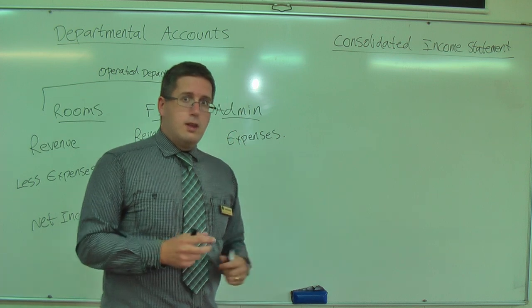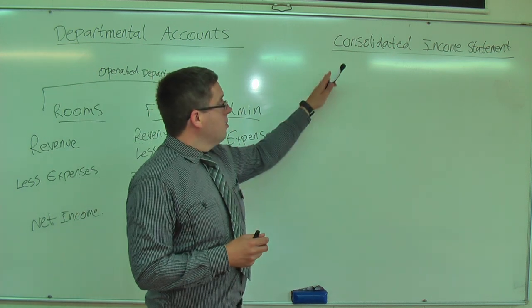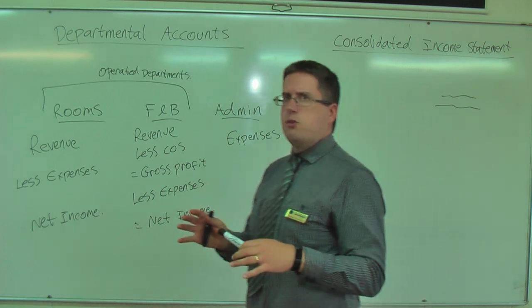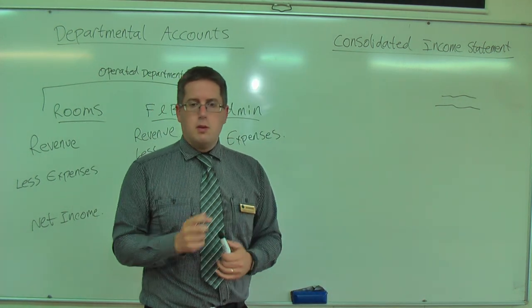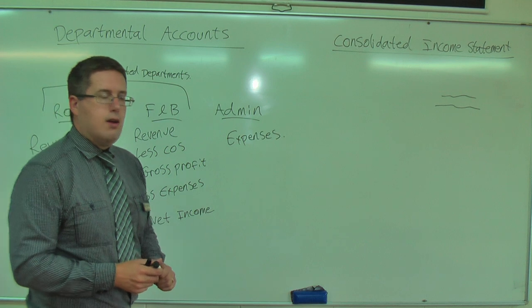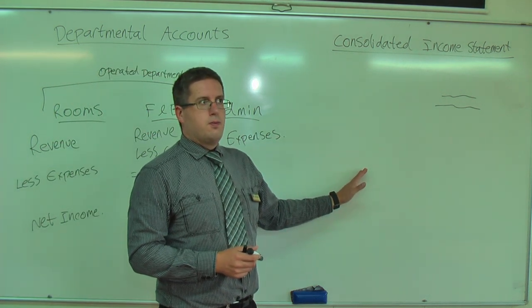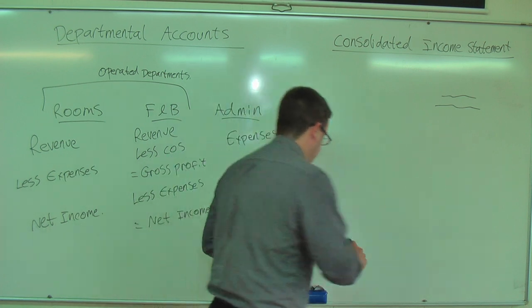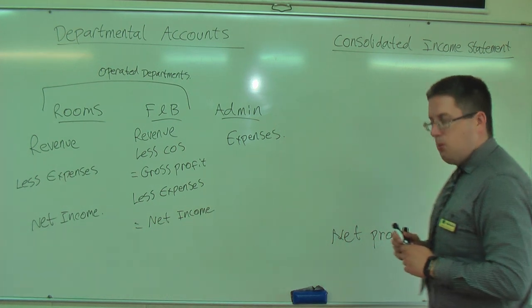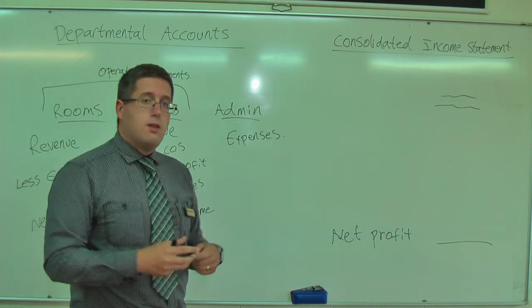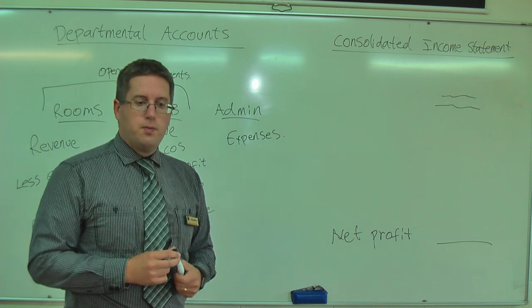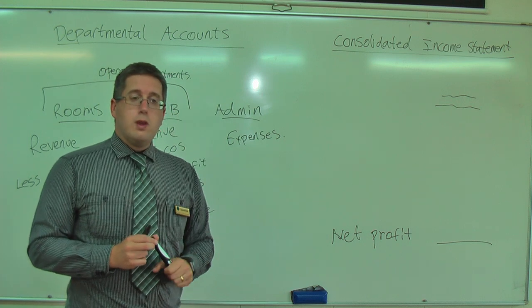You'll see there in the example in the book we have our operated departments, and we have the net income figures only. We don't use the room sales figure, we don't use the food sales. We want to use these items here - the net income figures. They're the ones that get carried over to the income statement. So you follow the format and eventually you do come down and you calculate the net profit of the hotel. So the net profit of the hotel is the whole hotel, the net profit when you take all departments into account.